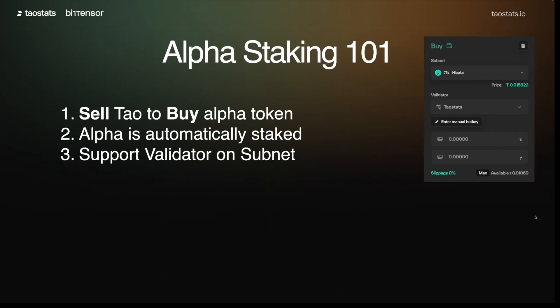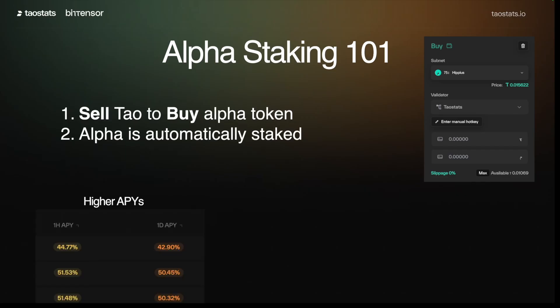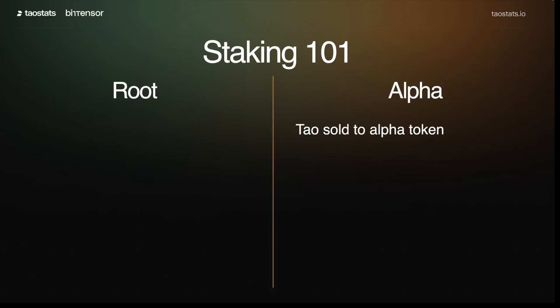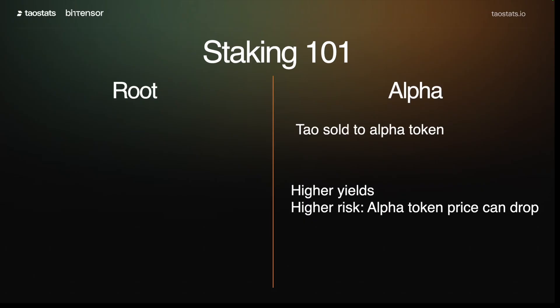When you stake on alpha, you are selling your TAO and buying an alpha token. That alpha is automatically staked to a validator as part of that process, and now you are supporting that validator on the subnet. When people look at alpha staking, they see higher APYs. But it's important to note that alpha has high price volatility. So if you sold your TAO to alpha and the alpha goes down, when you unstake you're going to have less TAO — there's more risk. The price could go up, which is a bonus, but that's part of the risk of staking into alpha. Your returns are in alpha and it compounds about every 72 minutes, giving you higher yields but with that higher risk.